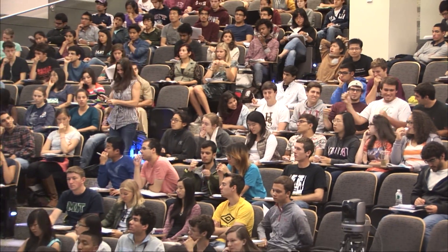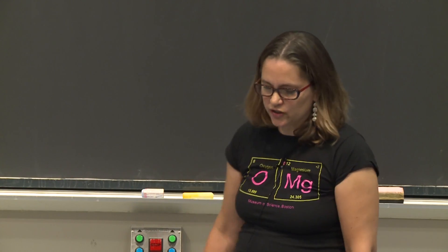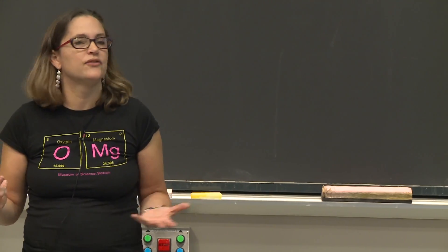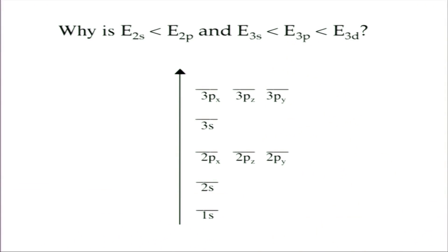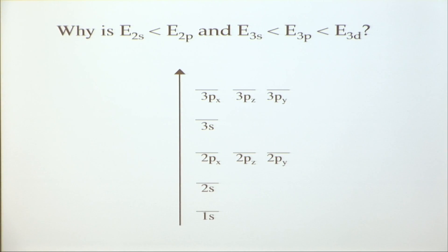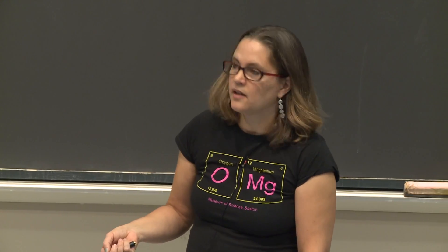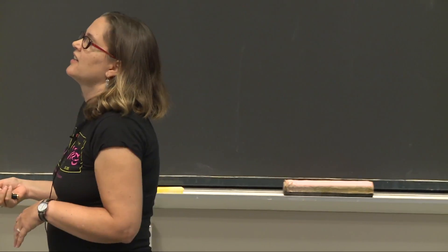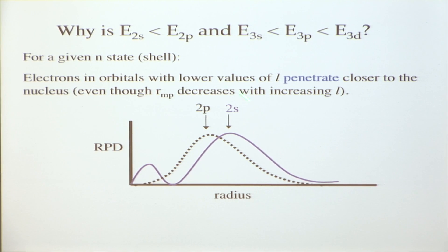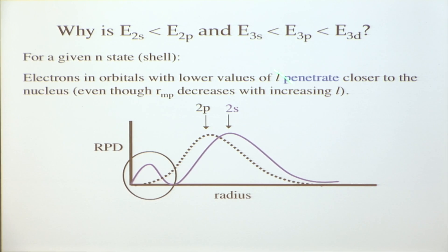Now we're going to talk more about why shielding is important. Shielding determines the order of orbital energy. We want to ask: why is 2s lower than 2p, or 3s lower than 3p? Let's go back to radial probability distributions. Considering 2s and 2p, the maximum probable radius is greater for 2s than for 2p. But what we really care about when talking about shielding is the probability near the nucleus.